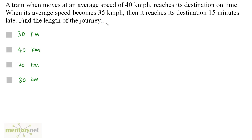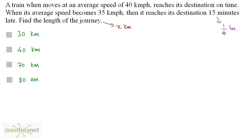Let the length of the journey be x kilometers. When the speed becomes 35 km/h, the train is 15 minutes late. Converting 15 minutes to hours gives 1/4 hour. We take the difference in time at 40 km/h and 35 km/h, which equals 1/4 hour.